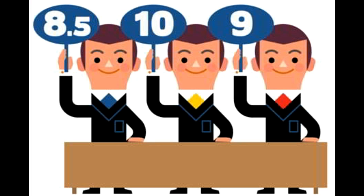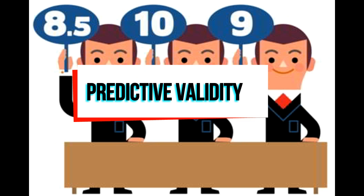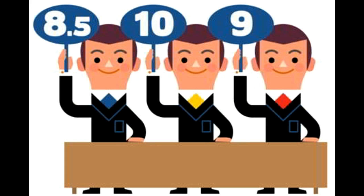Predictive Validity: It refers to the degree to which the results of a test correlate to the results of a related test administered sometime in the future. The difference in the time period between administering the two tests allows the correlation to possess a predictive quality. For example, if an evaluative test claims to test the intelligence of students, and the students with high scores gained academic success later while the ones with low scores did not do well academically, the test is said to possess predictive validity.